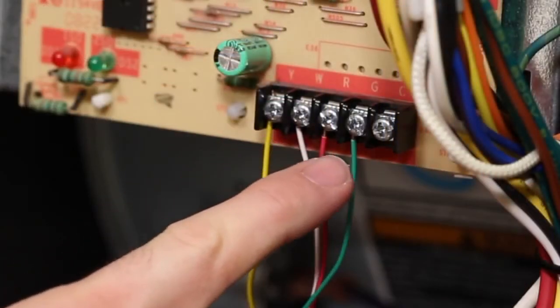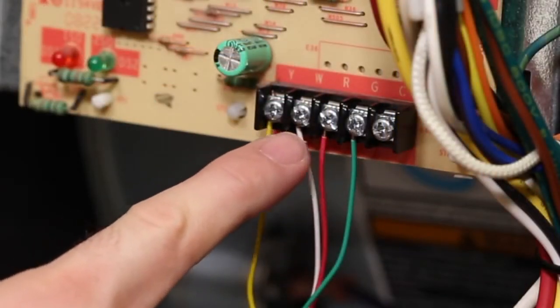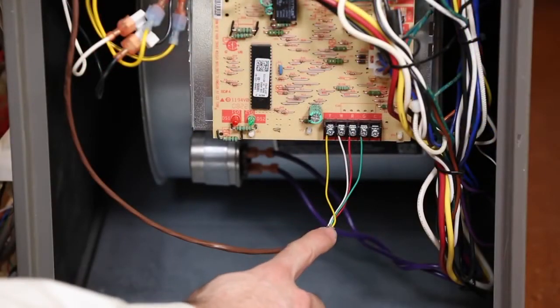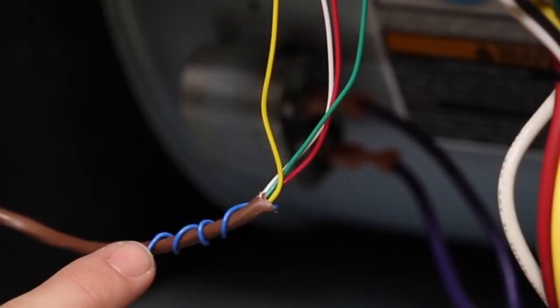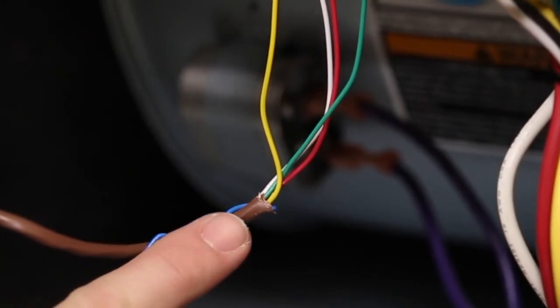Locate the wires attached to the wire terminals on the furnace control board. Once located, trace them back to the wire bundle. Look for the end of the same unused wire that is not being used at the thermostat.